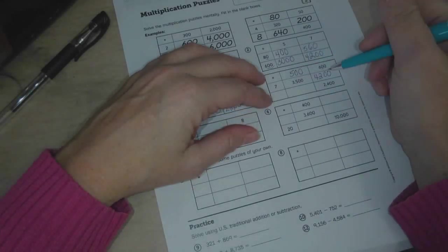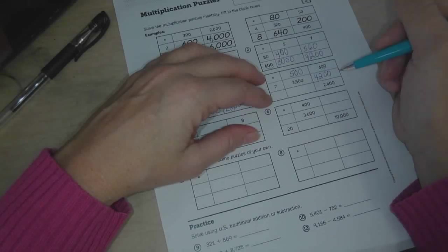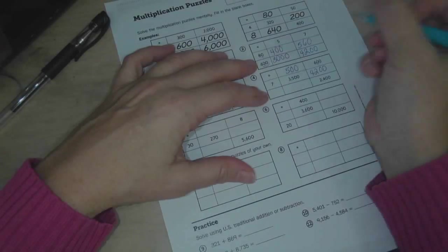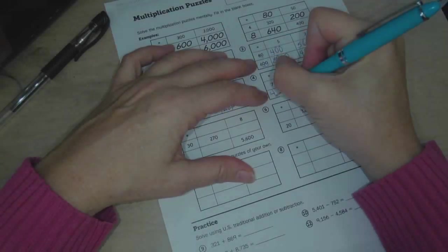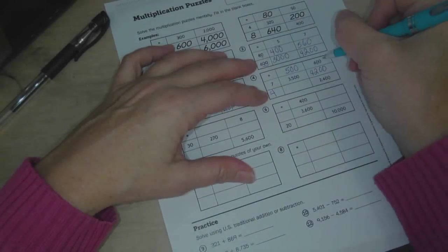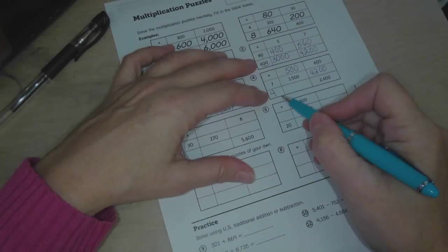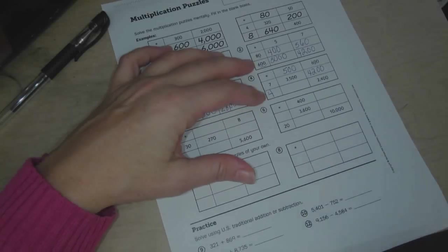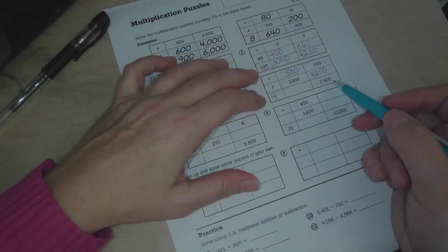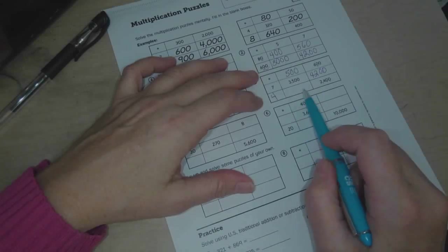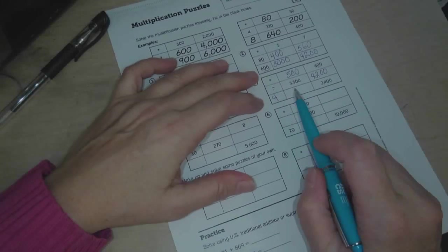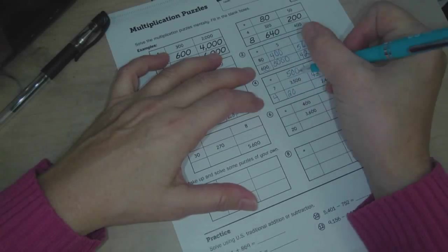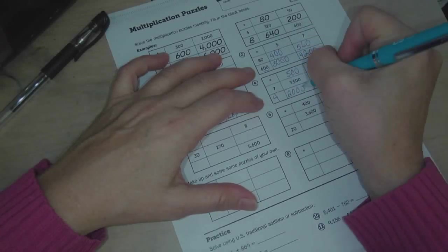So what times 6 equals 24? Well, we know that 4 times 6 equals 24. Now these two zeros, the two zeros are right here. So that means we don't need to put them over here. So we can just leave it as 4 times 600 equals 2,400. So now we have to figure out what goes here. 4 times 500, 2,000.